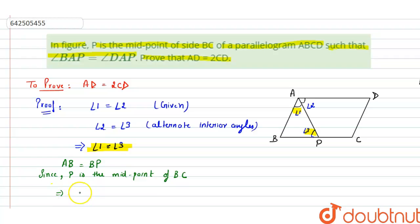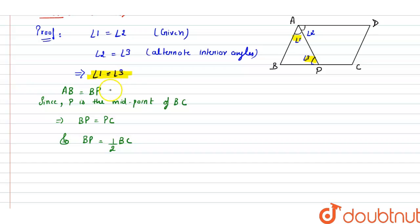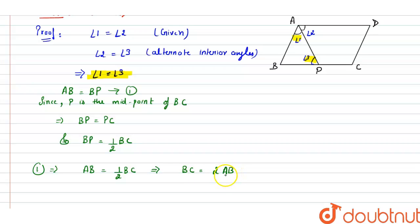Since P is the midpoint of side BC, BP is equal to half of BC. So equation 1 can be written as AB is equal to half of BC, which implies BC is equal to twice of AB. Now, ABCD is a parallelogram, therefore opposite sides are equal: BC is equal to AD, so we can write AD is equal to twice of AB.